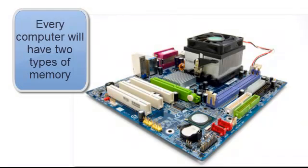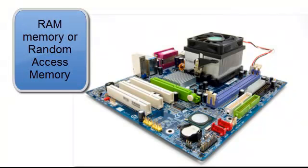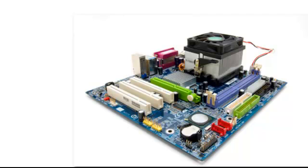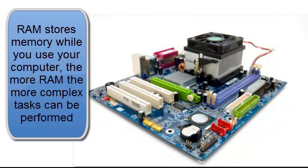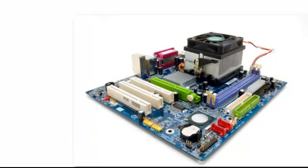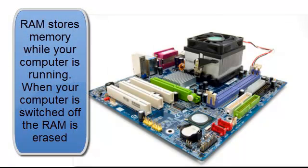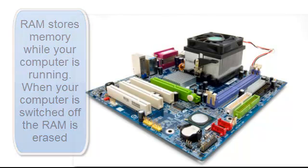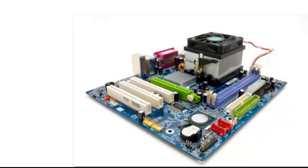Your computer also has two types of memory. The first type is RAM, or Random Access Memory — this is the short-term memory that allows you to perform tasks while using your computer. The more RAM you have available, the more tasks that can be performed at the same time, which is quite important for gaming and other large pieces of software. The RAM holds your memory until the computer is switched off; once switched off, the RAM is wiped clean. So if you want to save some work, we need to have another memory.